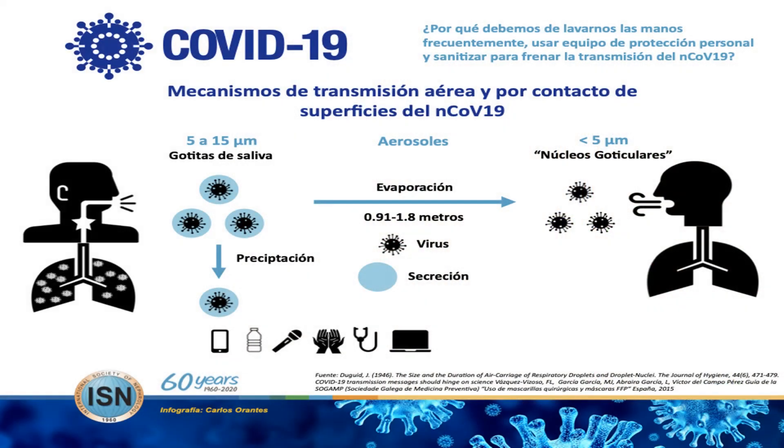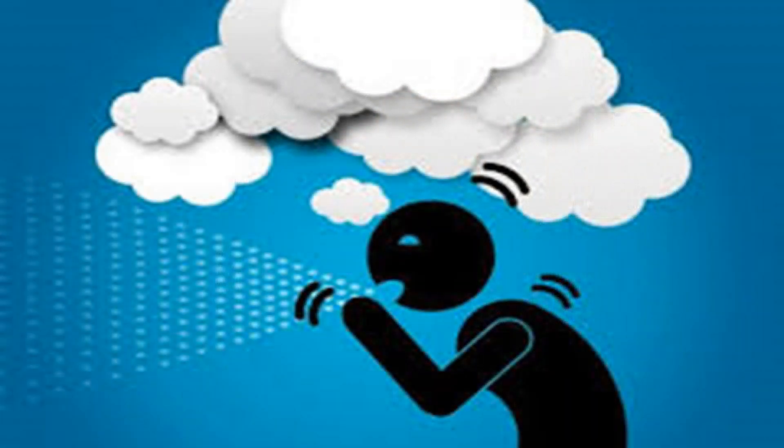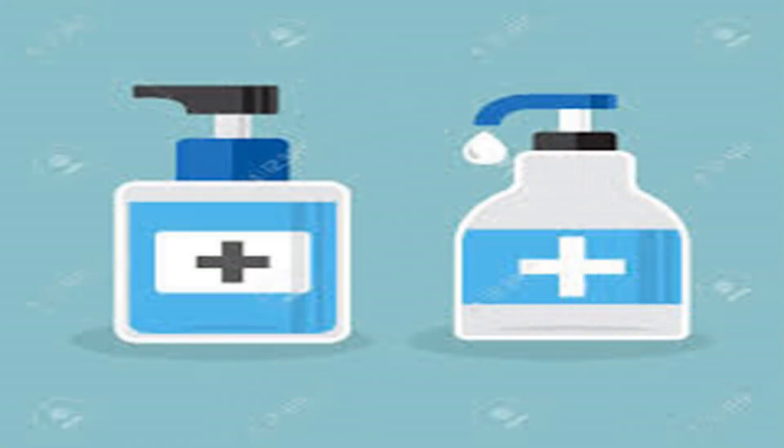The virus can be transmitted from human to human, and symptomatic people are the most frequent source. Moreover, there are suggestions that individuals who remain asymptomatic could also transmit the virus. The transmission is believed to occur through respiratory droplets from coughing and sneezing. Coronaviruses are also sensitive to heat and to ultraviolet rays.